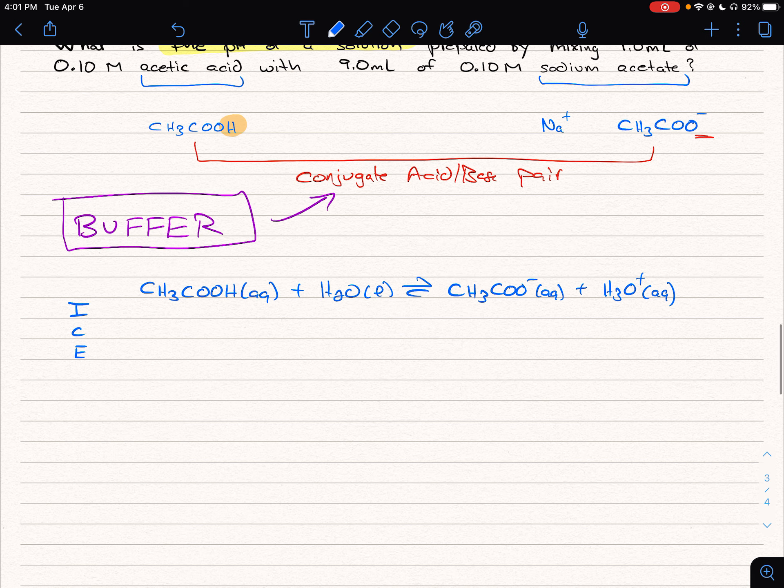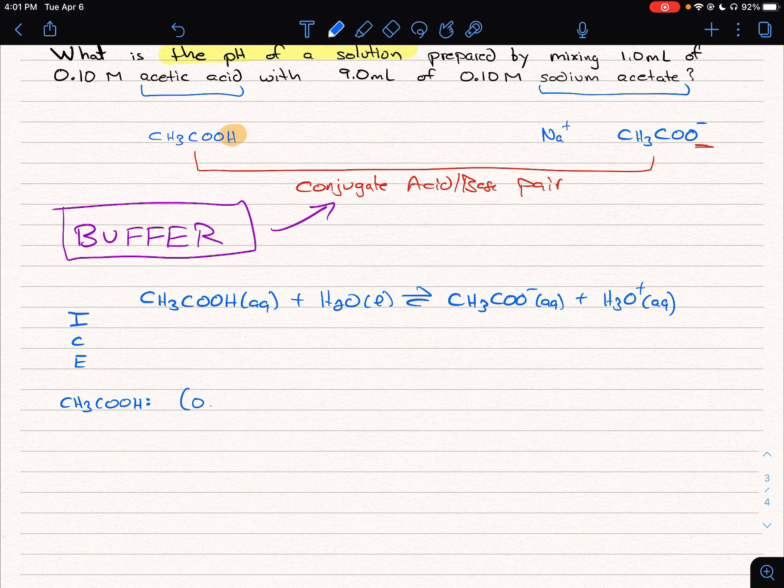What I mean by that is we're going to take our acetic acid first and figure out how many moles we have. So we have 1 mL, so 0.001 L times 0.1 M. And so that's going to end up being 1.0 times 10 to the negative 4th moles.